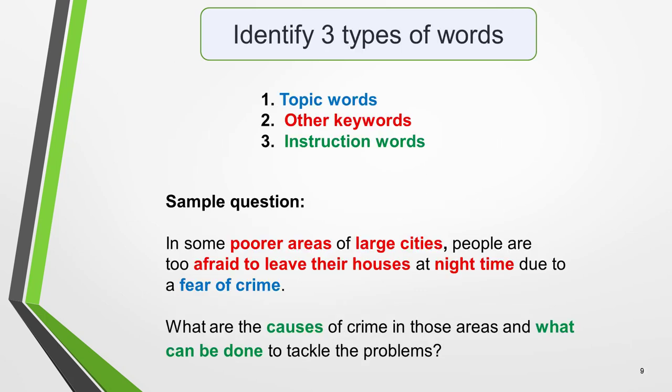Fortunately, there's a quick and easy way to analyse and understand Task 2 questions. You just need to identify three different types of words: topic words, other keywords, and instruction words. Here's a typical essay question with the different types of words highlighted.